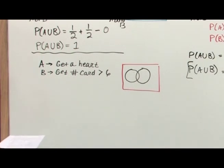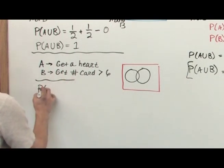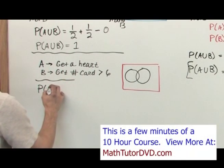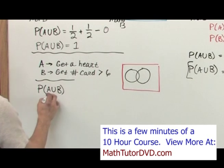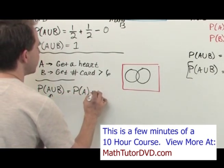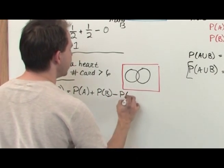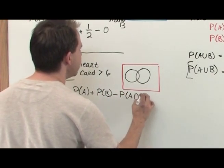The next thing you do is the probability of A union with B, which is A or B. I'm going to write it A or B just to kind of help you remember. That equals the probability of A plus the probability of B minus the probability of A and B.